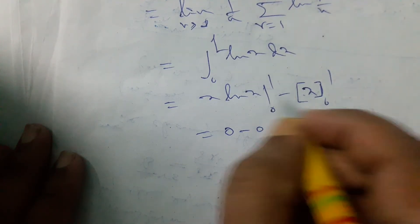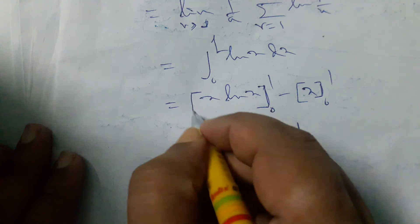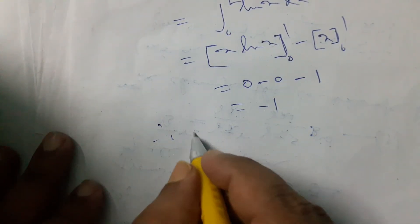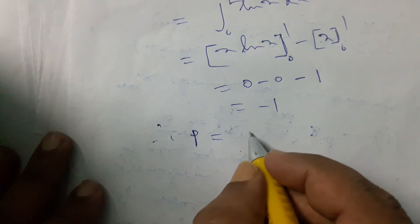So the result will be minus 1. Therefore, P is equal to e to the power minus 1, that is 1 by e.